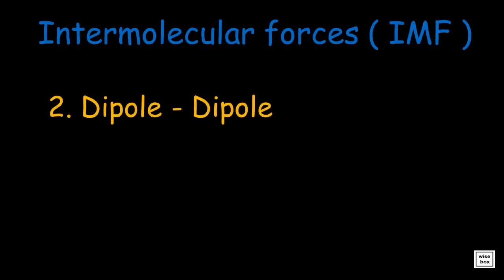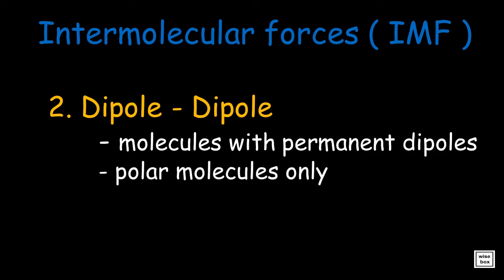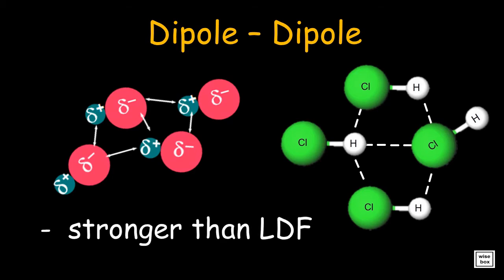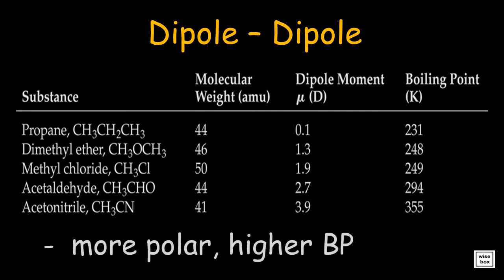Dipole-dipole interaction happens in molecules that have permanent dipoles. The positive end of one molecule is attracted to the negative end of the other, and vice versa. Thus, these forces are found in polar molecules only. The dipole-dipole interaction between polar molecules is stronger than London dispersion forces. The general trend is: the higher the dipole moment, or the more polar the molecule, the higher its boiling point.